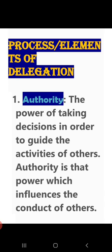Now, what is the process or elements of delegation? Delegation ka process ya elements kya kya hote hai? Number one: authority. Authority kya hote hai? The power of taking decisions in order to guide the activities of others. Doosron ki activities ko guide karne ke liye jo hum decisions lete hai, woh authority kehlata hai. Authority is that power which influences the conduct of others — jiski help se hum doosron ka behavior, doosron ka conduct influence kar sakte hai.